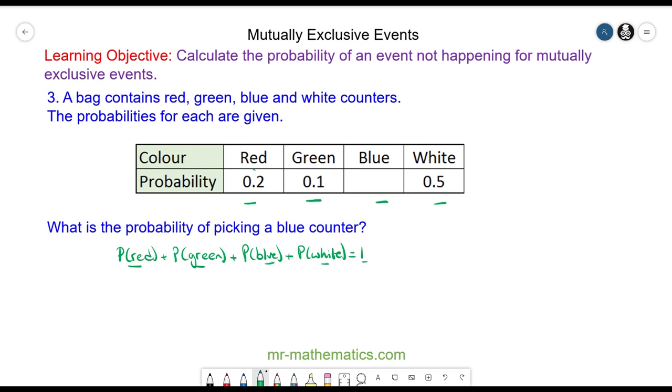We can substitute these numbers into our equation. We have the probability of red, which is 0.2, plus the probability of green, which is 0.1, plus the probability of blue, which we're trying to find, added to the probability of white, which is 0.5, equals one. We can add the numbers together, so the probability of picking a blue added to 0.8 equals one.